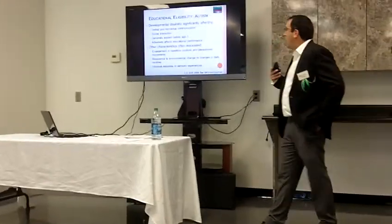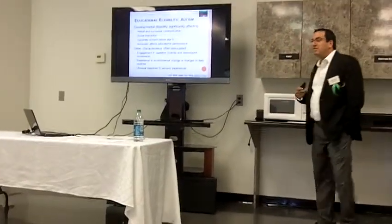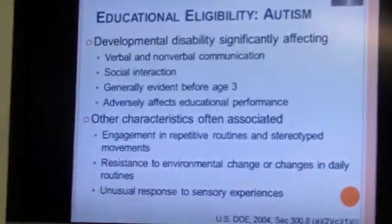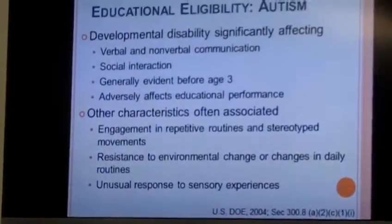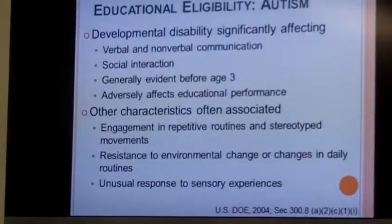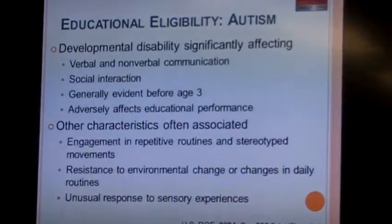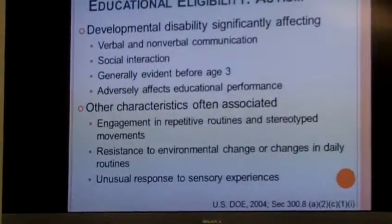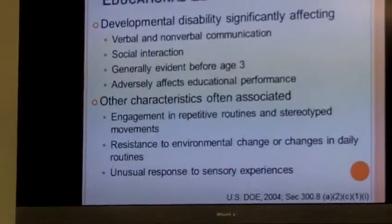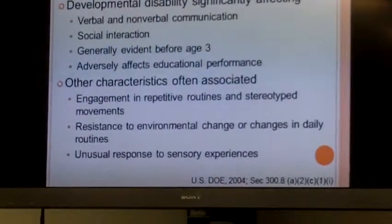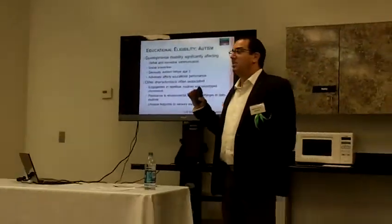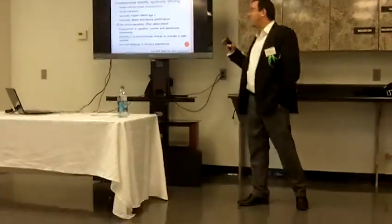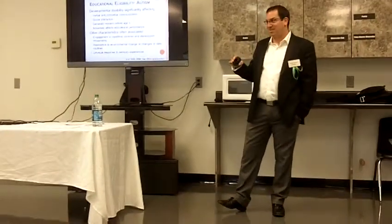For eligibility of autism, basically they need to have a developmental disability that significantly affects verbal and non-verbal communication, social interaction, generally evident before the age of three. And this is the big difference: it adversely affects educational performance. So it has to affect their education in some way, and how you define 'affecting the education' gets difficult.